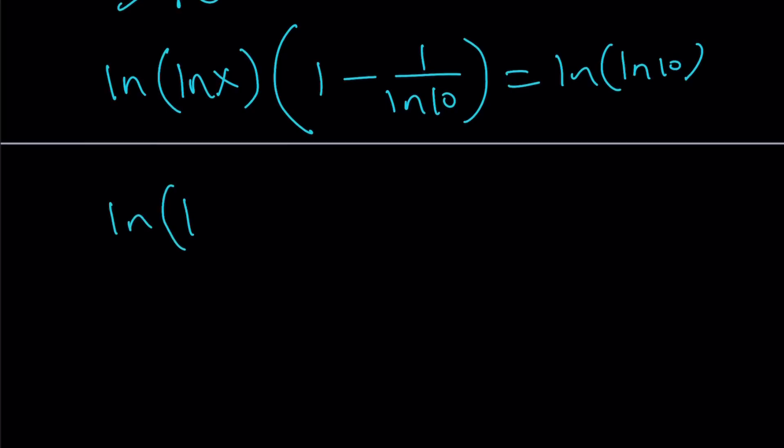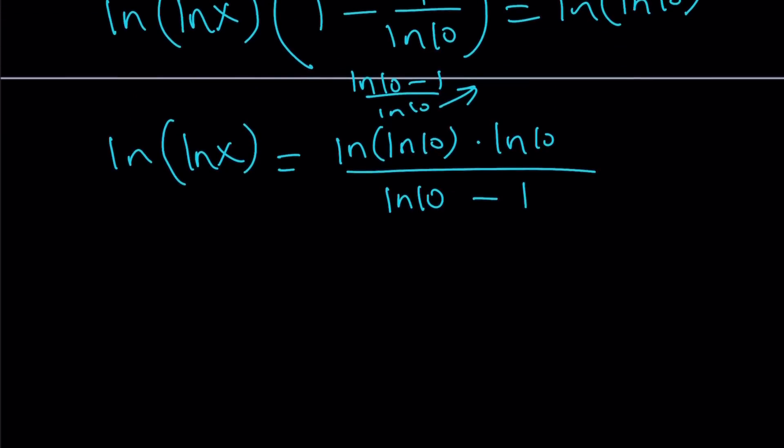This gives us 1 minus 1 over ln10 equals ln ln10. And we're almost there. Divide both sides by this. But you know what? You can also simplify this a little bit before you divide, maybe. And then multiply by the reciprocal. You're going to get ln ln10 times ln10, which comes from here, divided by ln10 minus 1.